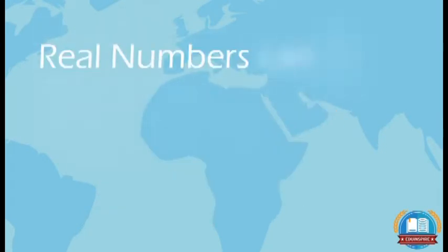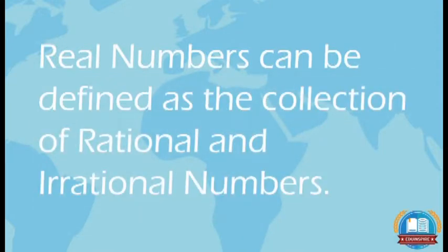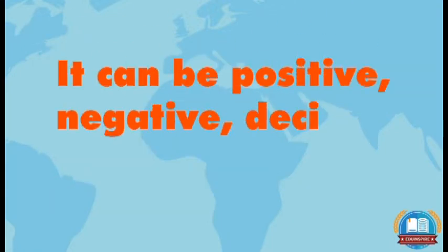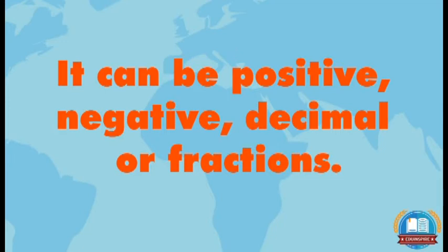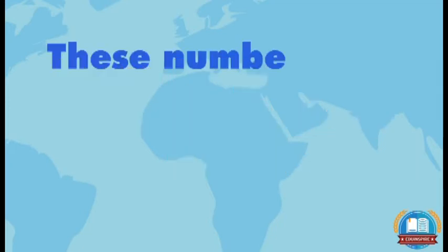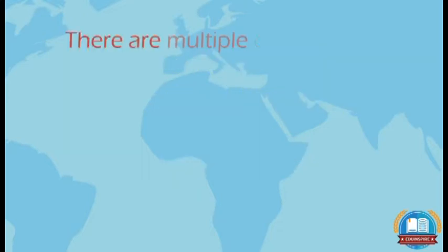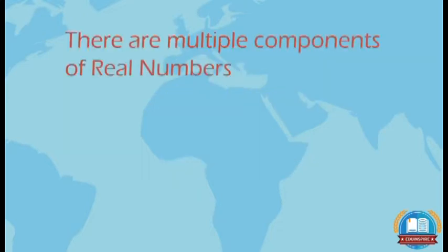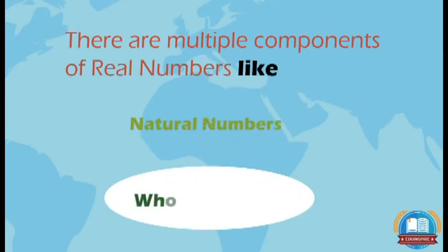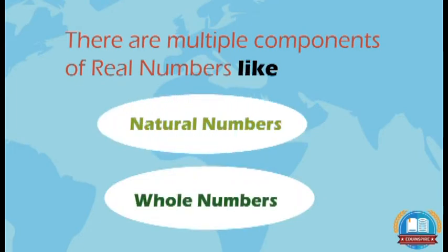Real numbers can be defined as the collection of rational and irrational numbers. They can be positive, negative, decimal, or fractions. These numbers are denoted by the symbol R. There are multiple components of real numbers like natural numbers, whole numbers, etc. We will go through these components one by one.